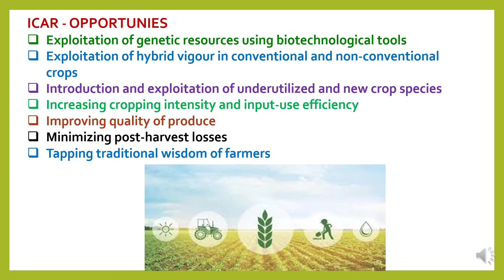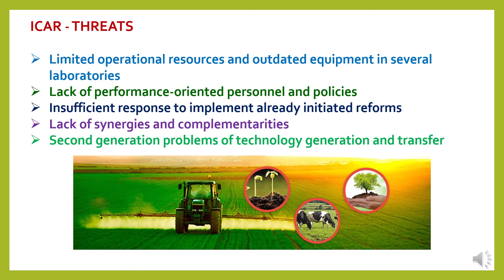Opportunities at ICAR include: exploitation of genetic resources using biotechnological tools; exploitation of hybrid vigor in conventional and non-conventional crops; introduction and exploitation of underutilized and new crop species; increasing cropping intensity and input use efficiency; improving quality of produce; minimizing post-harvest losses; and tapping traditional wisdom of farmers. Threats and weaknesses include: limited operational resources and outdated equipment in several laboratories; lack of performance-oriented personnel and policies; insufficient response to implement already initiated reforms; lack of synergies and complementarities; and second-generation problems of technology generation and transfer.